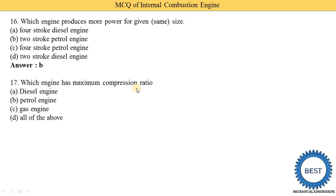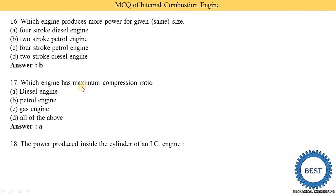Next MCQ: which engine has the maximum compression ratio? Option A: diesel engine, option B: petrol engine, option C: gas engine, option D: all of the above. The diesel engine has the maximum compression ratio. The specific values of compression ratio for petrol and diesel engines will be covered in later MCQs.